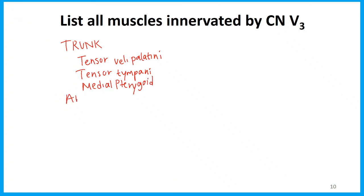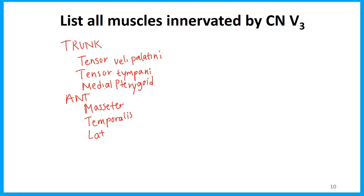Off of the anterior division, these fall into the same group as the medial pterygoid — the muscles of mastication: masseter, temporalis, and lateral pterygoid.